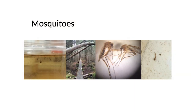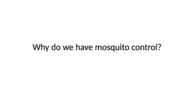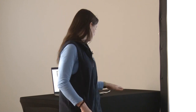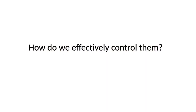We'll start off with mosquitoes and then at the end I'll go over some information on ticks. So the big question we'll ask first is: why do we have mosquito control? The answer is really because mosquitoes have caused more than half the deaths in human history. Mosquitoes carry a lot of different types of diseases, and we want to know how to protect ourselves against them.